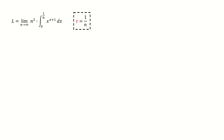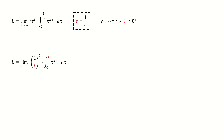First, we define t equals 1 over n. When n goes to infinity, t goes to 0. Plug in the substitution.